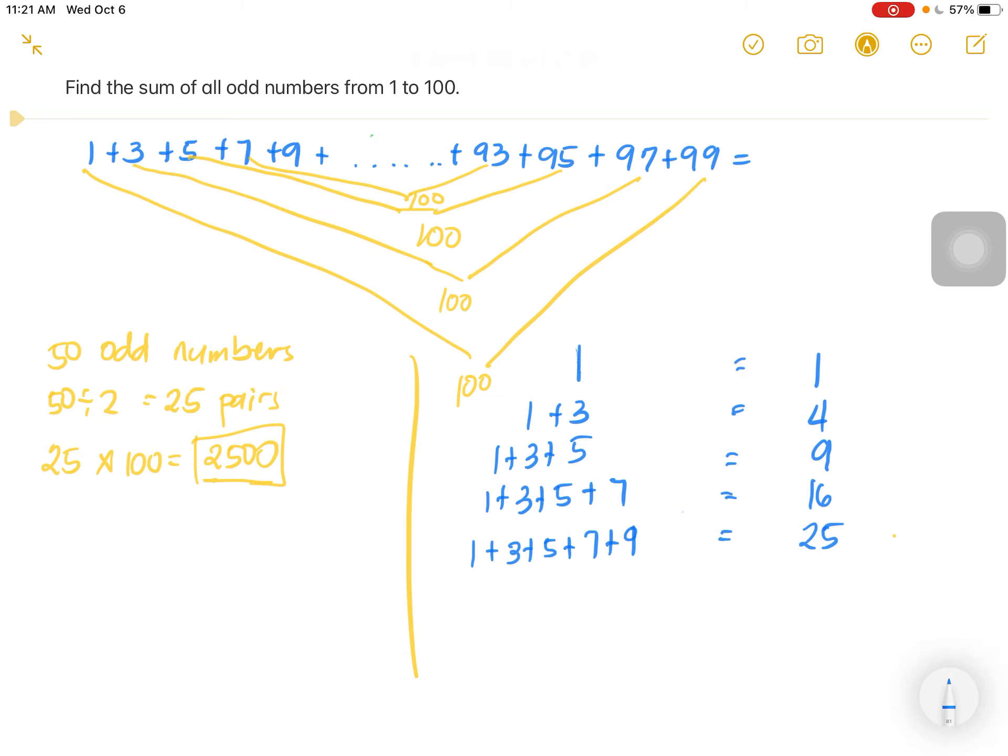The first 6 odd numbers, 1 plus 3 plus 5 plus 7 plus 9 plus 11, it's now 36.